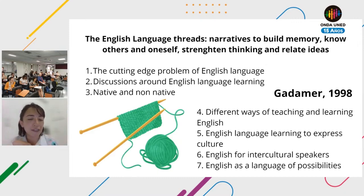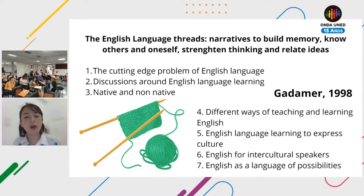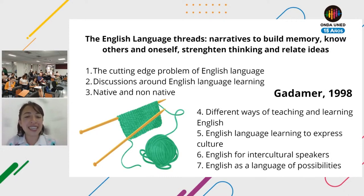Number six is English for intercultural speakers — not only learning a language to express culture, but how students and teachers can become intercultural speakers through the study and use of the language. Finally, number seven is English as the language of possibilities, discussing all the doors opened thanks to English: understanding materials, articles, TED talks, movies, and enabling communication with others.